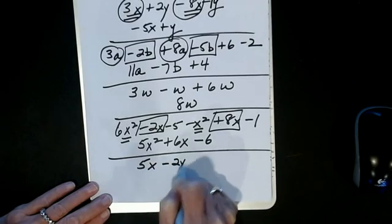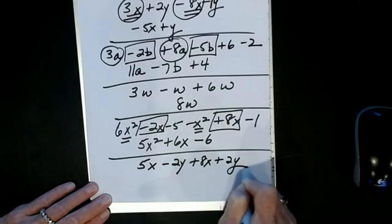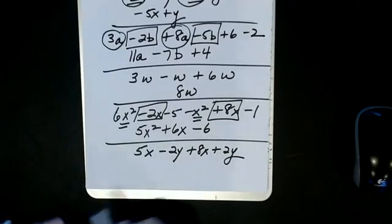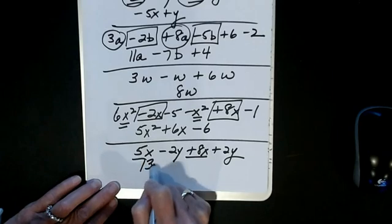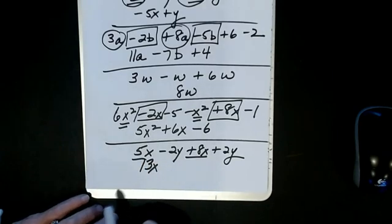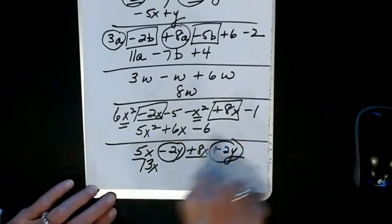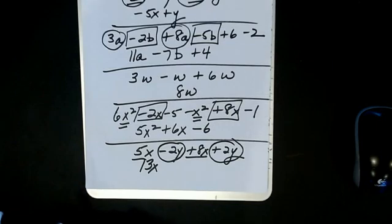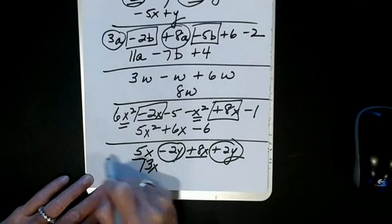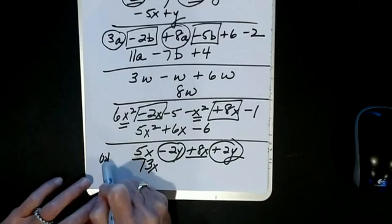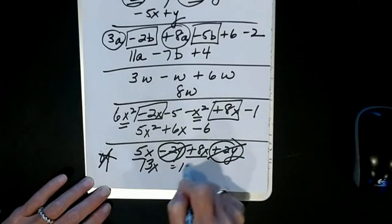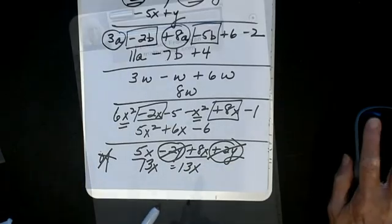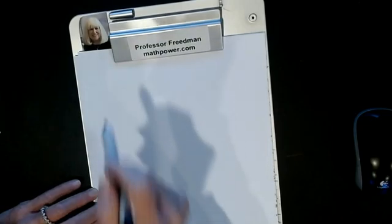Let's do another one: 5x minus 2y plus 8x plus 2y. I combine my x's — signs are alike, add and take the same sign — I get 13x. Then I look at my y's: I have minus 2y and plus 2y. Signs are different, subtract — I get 0. We would never write 0y because 0 times anything is 0. They cancel each other out, so we just get 13x.